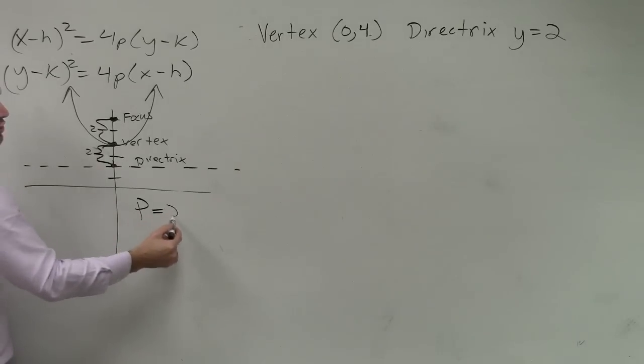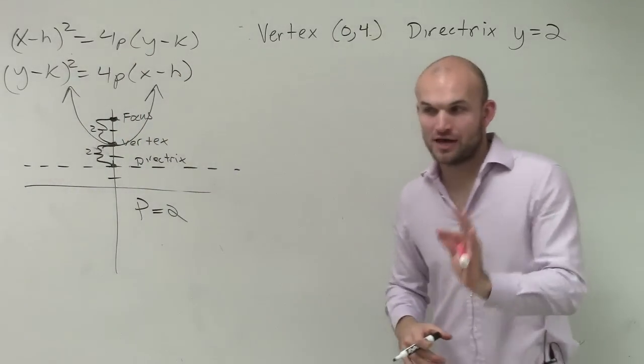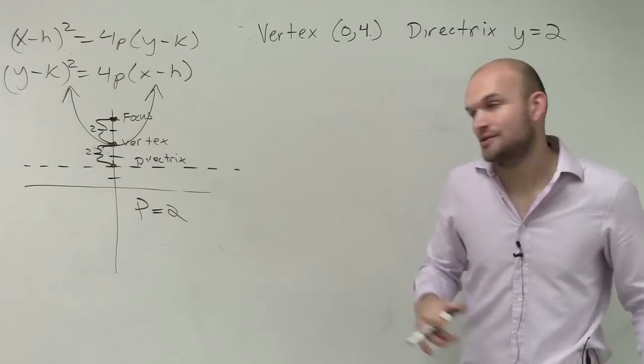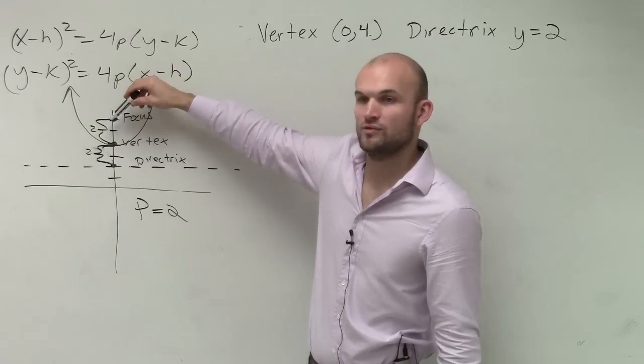Zero or five. Zero. The value of P, the value of P, if you want to write this down, write it down. The value of P is the distance from your vertex to your focus. It can be positive, it can be negative.